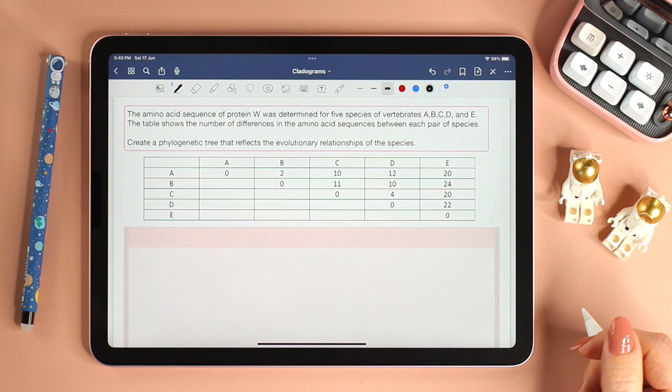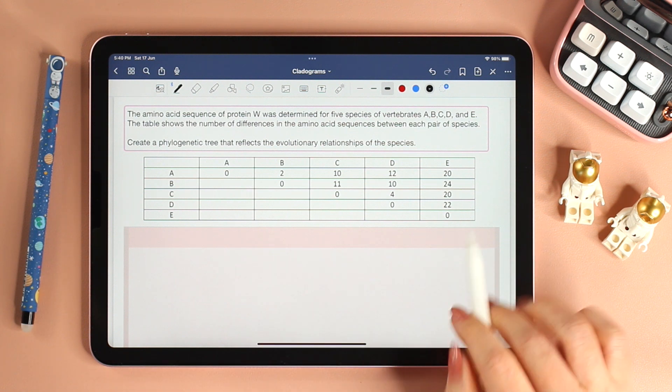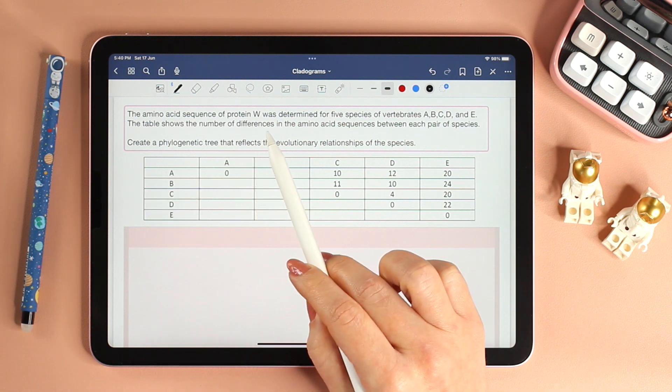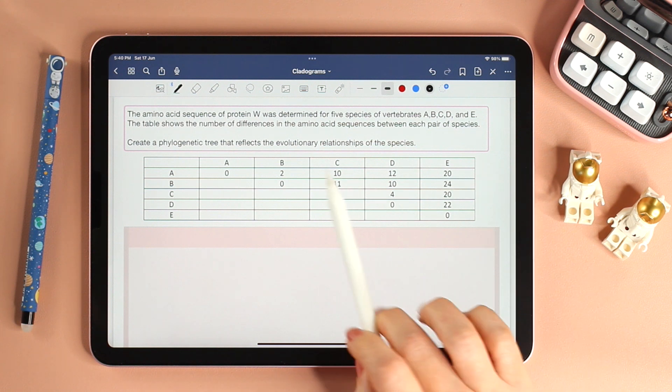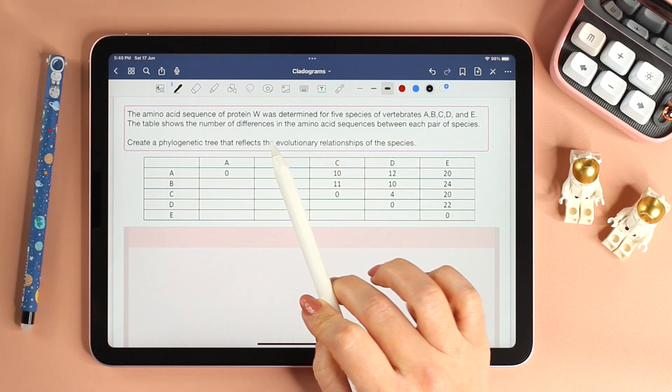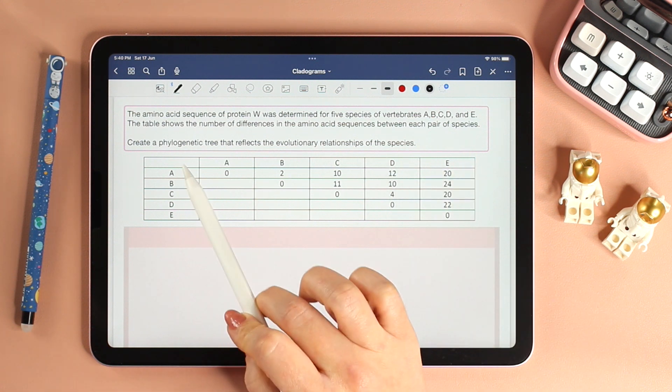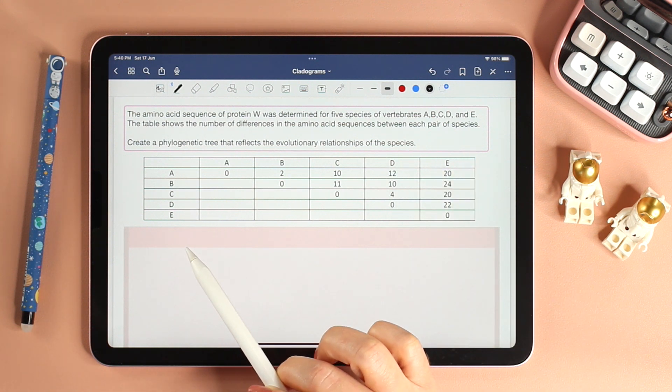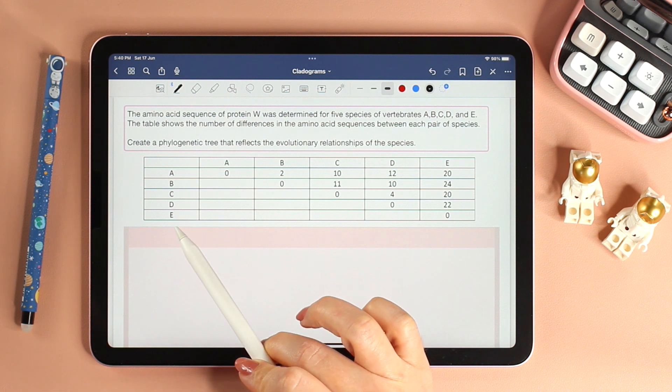To construct a tree, we will use this table. We have a protein W—of course it doesn't exist, it's a random protein—and the amino acid sequence for this protein was determined for five species of vertebrates: A, B, C, D, and E.